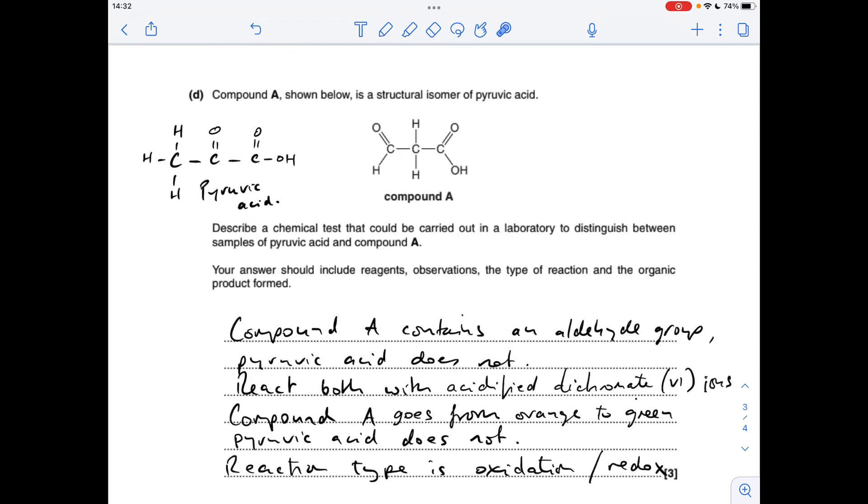Alternatively, you could react both of them with acidified dichromate 6 ions. This is another oxidising agent. It's going to oxidise the aldehyde group to a carboxylic acid group. And so compound A would give you the orange to green colour change, pyruvic acid won't, because there's nothing in this that can be oxidised under these conditions.